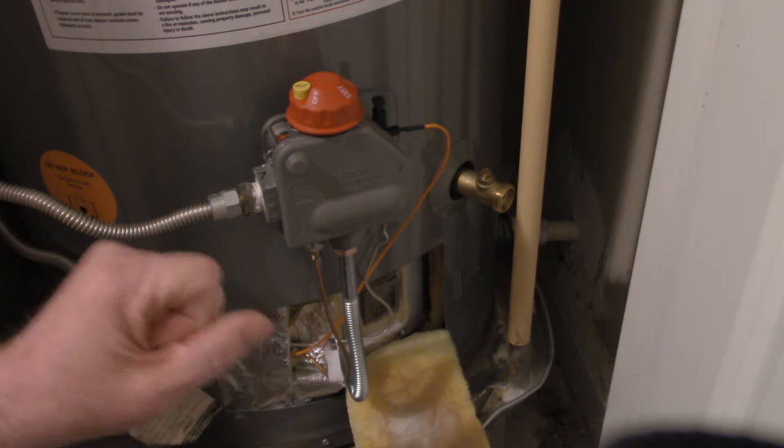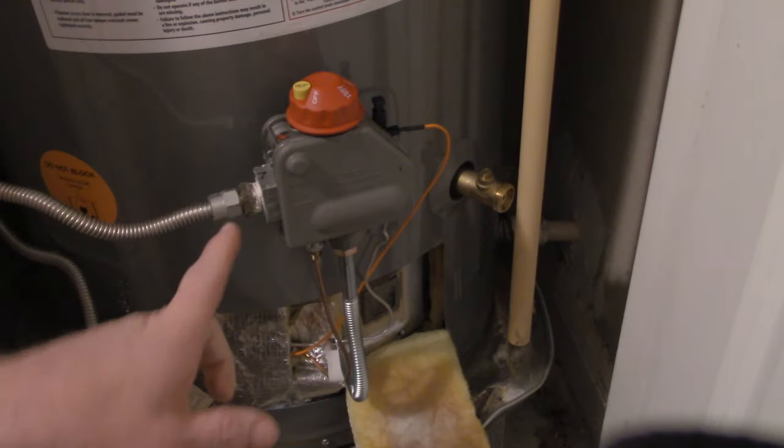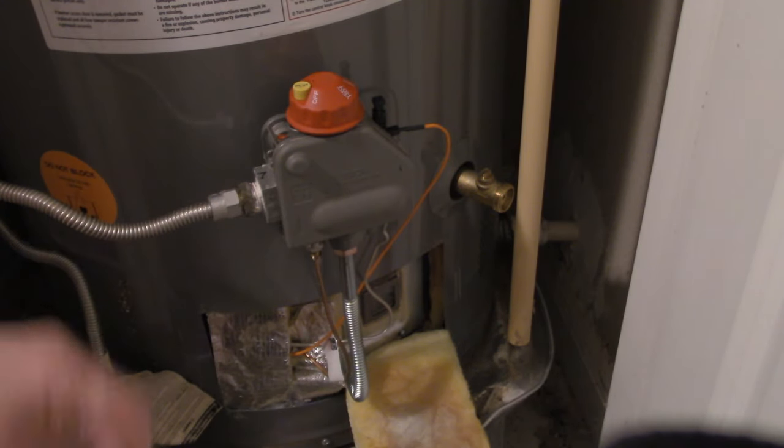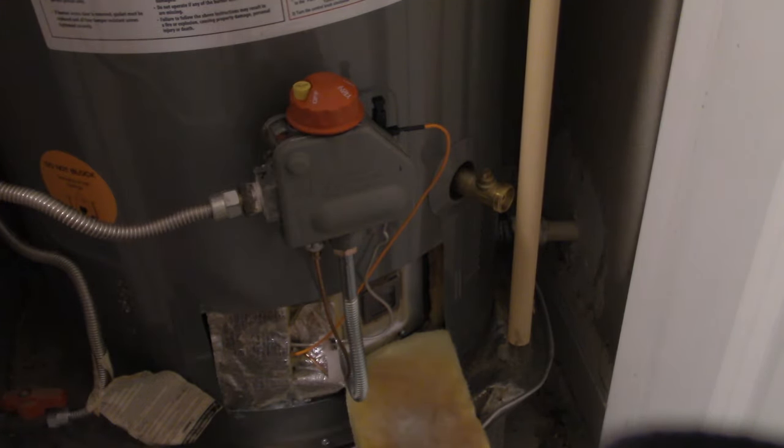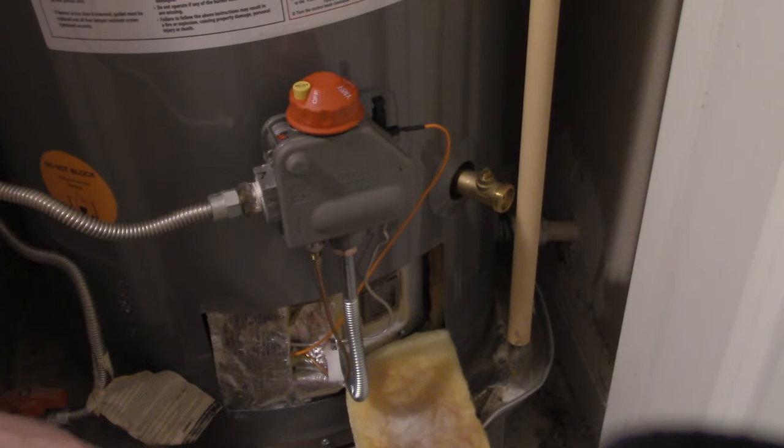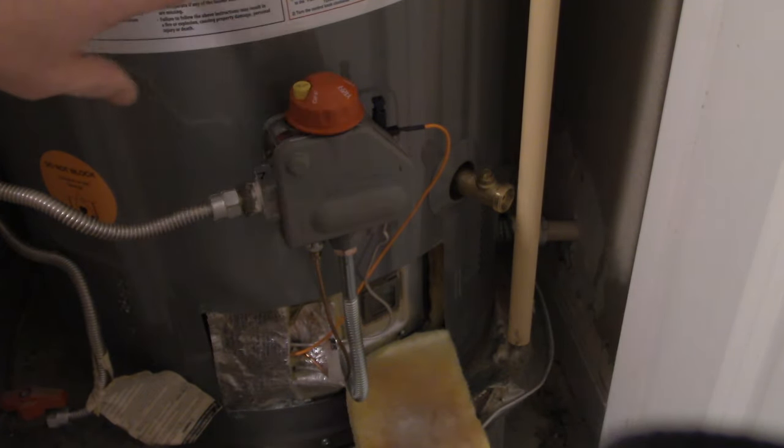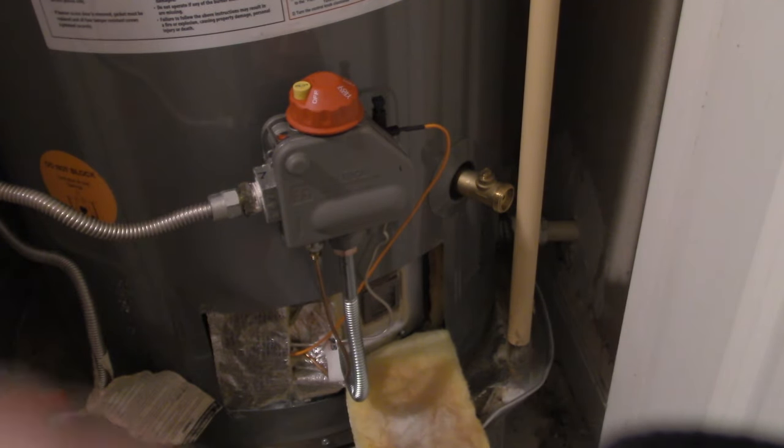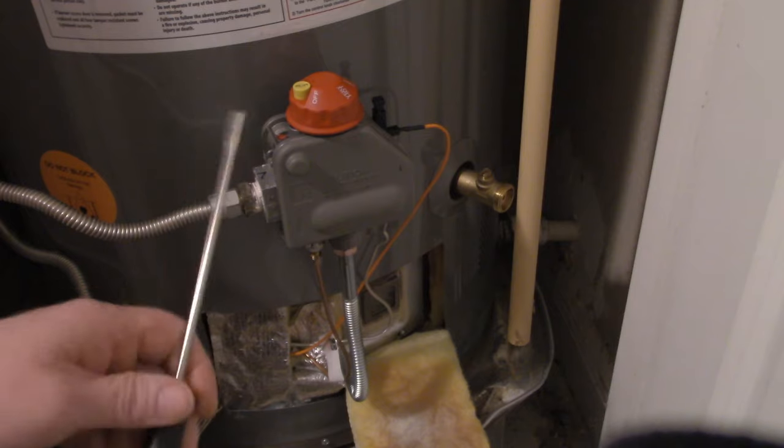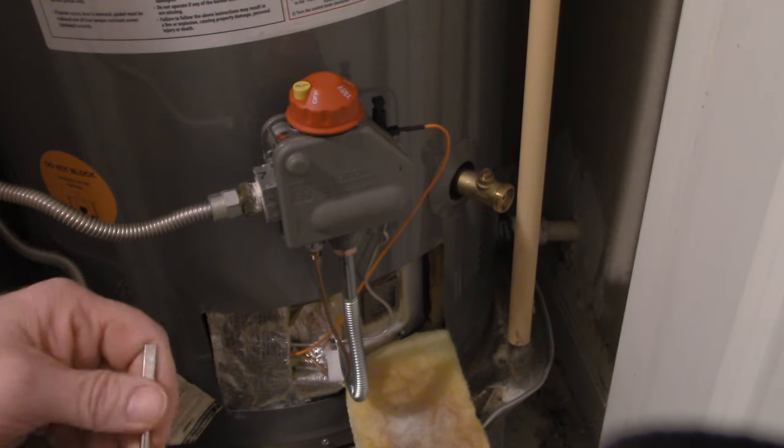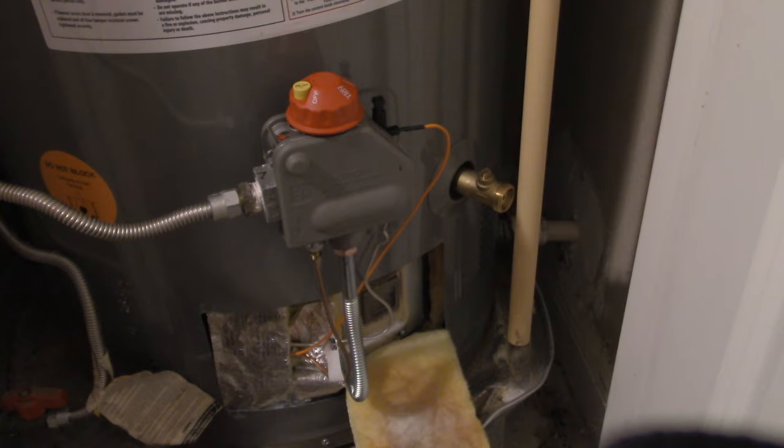So what happens is there is a sensor inside the tank, it screws in on the backside of this gas control valve, that is there to detect an over temperature condition. Again, we've all heard horror stories about these hot water heaters that over pressurize, they overheat and they end up exploding and taking off like a rocket. That is one of several safeties in there to prevent that. The problem with these is those emergency cutouts are apparently faulty.